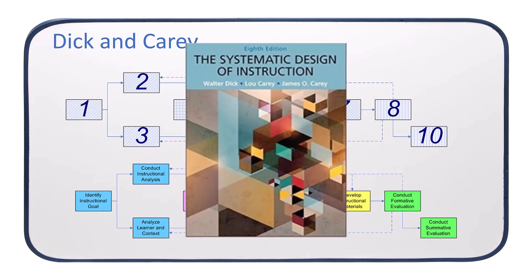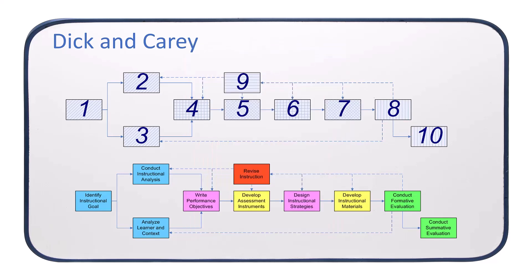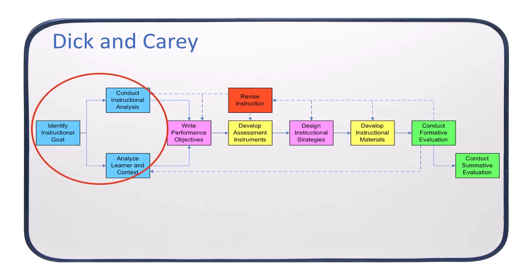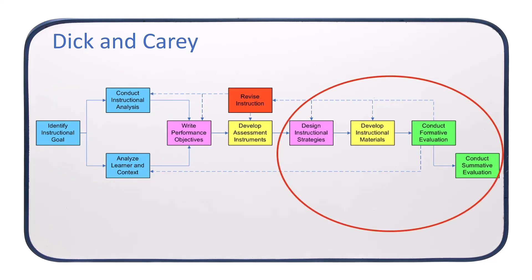This comes from the book 'The Systematic Design of Instruction,' and this is actually the model that I learned as part of my master's program. The Dick and Carey model is a 10-step model, and as you can see, a lot of the pieces of this model are similar to ADDIE. For example, there is an analysis phase, and there's also design, development, and evaluation — it's all in there in the Dick and Carey model.